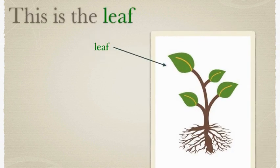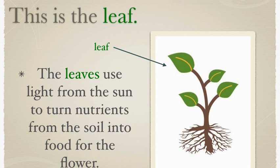This is the leaf. The leaves use light from the sun to turn nutrients from the soil into food for the flower.